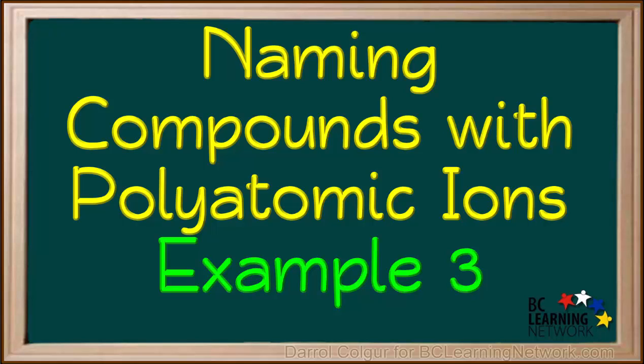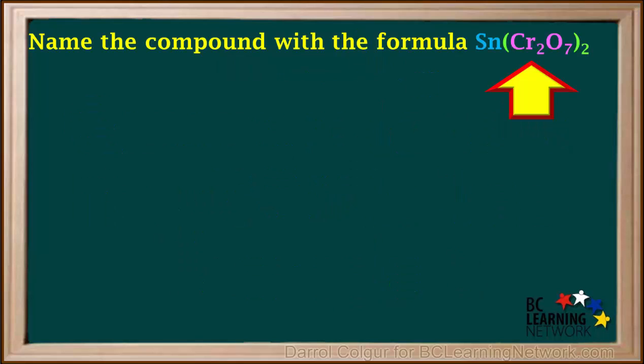We'll go over another example of naming an ionic compound that has a polyatomic ion in its formula. We're asked to name the compound with the formula Sn(Cr2O7)2.